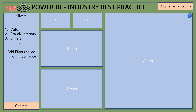When it comes to visual alignments, the next part is you need to keep not more than 10 visuals per page. This will improve the performance and it will be easy for end users to understand what the report says.